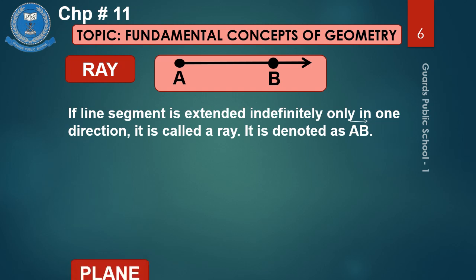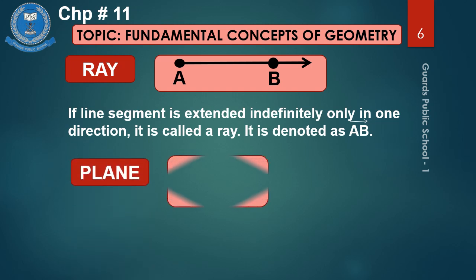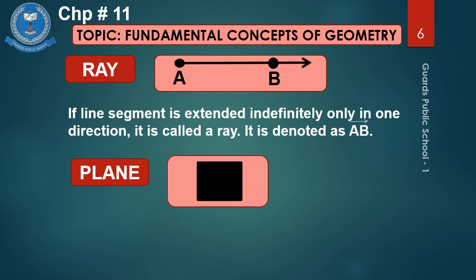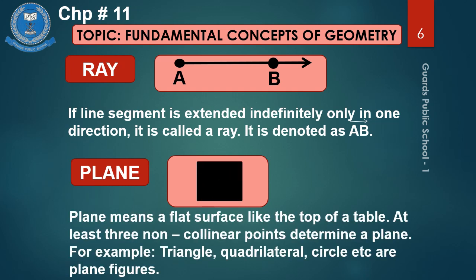Number 4 is plane. You see the diagram of a plane. A plane means a flat surface, like the top of a table. At least three non-collinear points determine a plane. For example, triangle, quadrilateral, circle, etc. are plane figures. It's a very simple and easy definition.